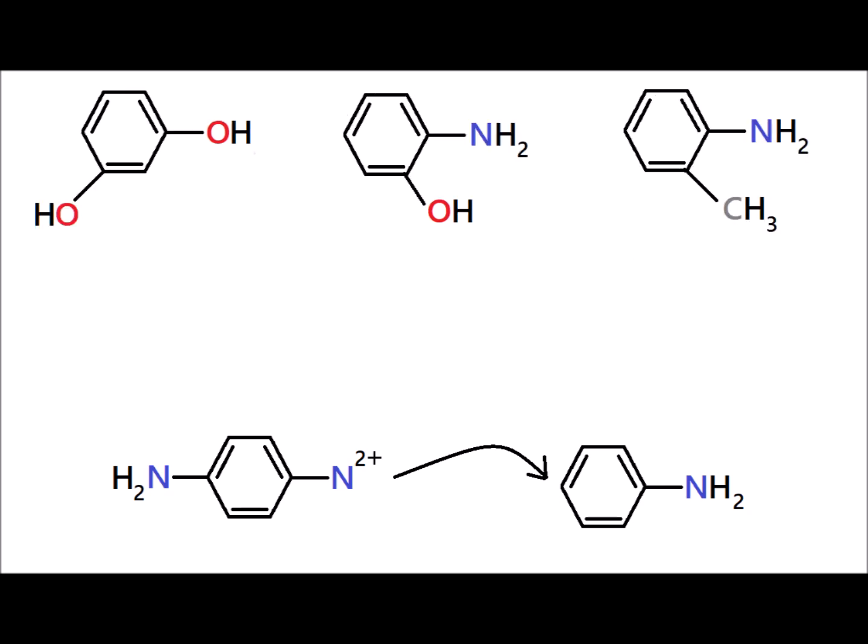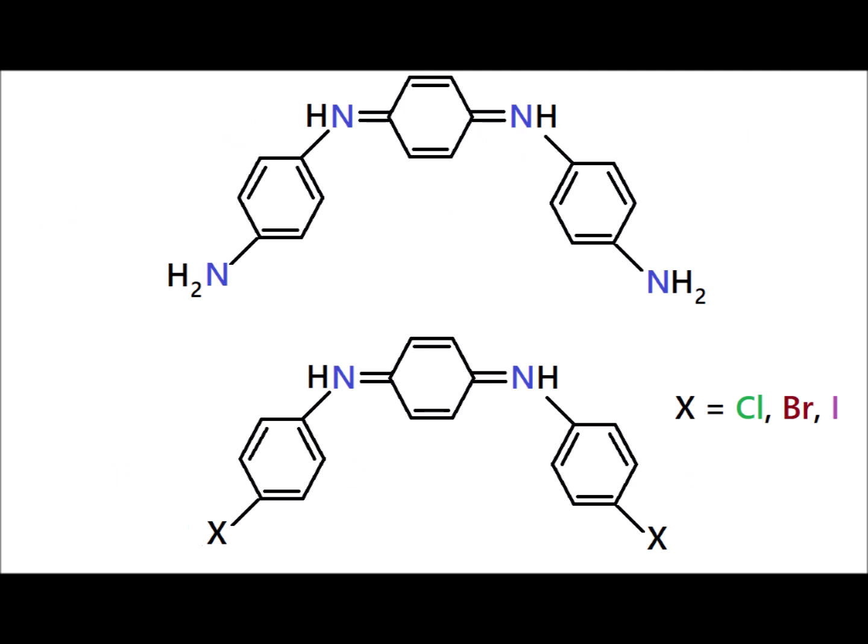Additional outer ring options include resorcinol, which has meta-hydroxyl groups; 2-hydroxyaniline; and 2-methylaniline, showing that alkyl groups can also be incorporated quite easily. Since we have aromatic amines at the ends of our molecule, we also have access to further structures via Sandmeyer reactions. One class of modifications easily made this way was replacing the terminal amino groups with halogens — in particular, chlorine, bromine, and iodide are relatively straightforward to incorporate into the oligoaniline.